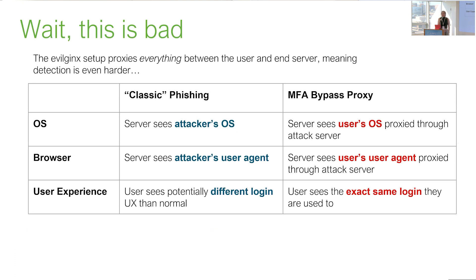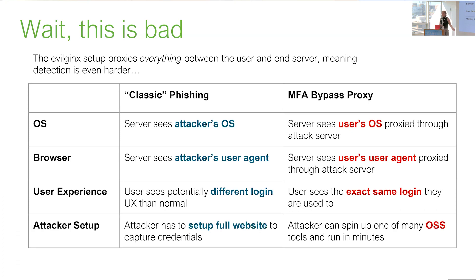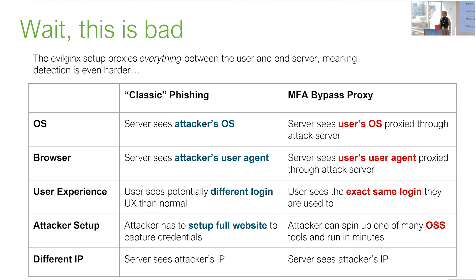The only difference is really the URL. We ran this experiment on our own employees — about 70 of them who knew they were part of a phishing experiment — and 40% did not check the URL. They work for a security company. The attacker has gone from needing to build a full-fledged website to literally spinning up a free EC2 instance, installing nginx, and running a pre-built open-source tool. The only signal we have that anything unusual is happening is the IP address, because the IP we see is the attack server.